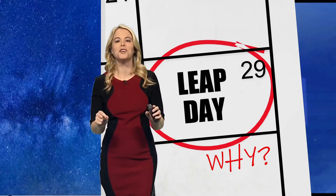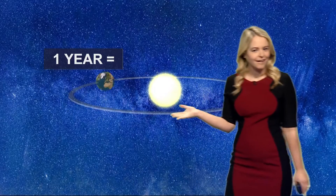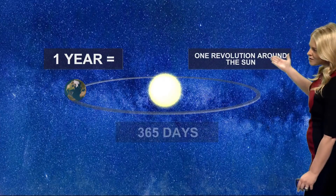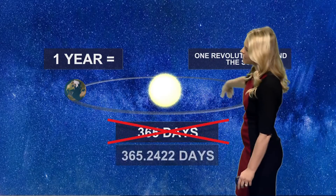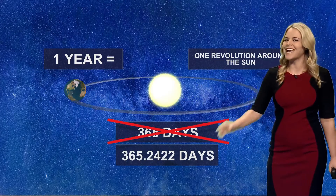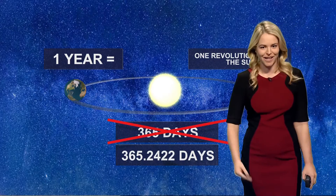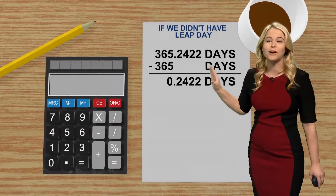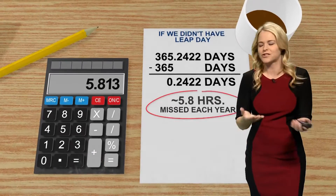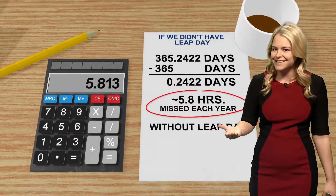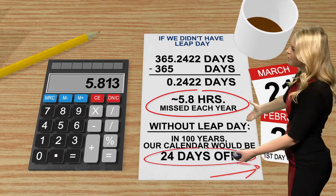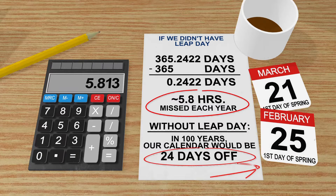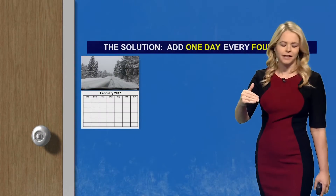One year is 365 days, or the time it takes for the Earth to make an orbit around the sun. Technically, a year is longer than 365 days. That extra quarter of a day needs to be accounted for, because if it's not, in 100 years we'll be off by 24 days — meaning we'd celebrate the first day of spring in February, and eventually the Fourth of July would be in the winter. That's why we add an extra day to the calendar every four years.